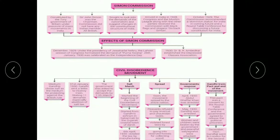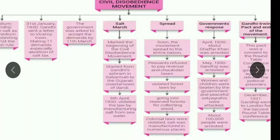We have done the Salt March and you must have watched the video I sent you yesterday. Next step: here you can see in this mind map, it marks the beginning of the Civil Disobedience Movement with the Salt March. It started from Gandhiji's Ashram at Sabarmati to the Gujarati coastal town of Dandi, and on 6th April 1930, they violated the law by manufacturing salt from seawater.